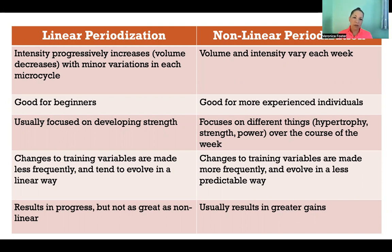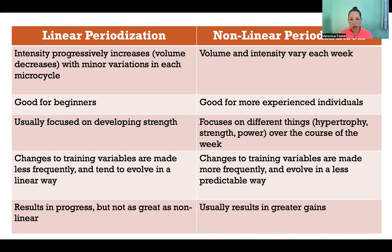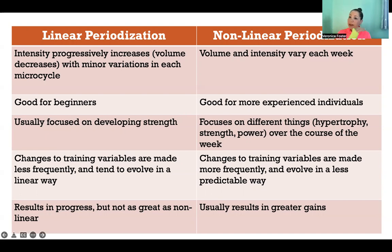In linear periodization, the intensity progressively increases and to accommodate that, the volume also has to decrease, and we're making minor variations within each microcycle. Whereas in nonlinear periodization, the volume and intensity vary week by week. So instead of having a gradual increase over time, we might increase and then decrease and then increase and then decrease, with an upward trend essentially.